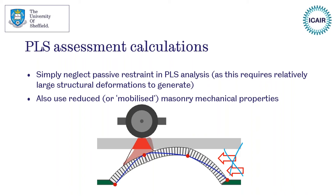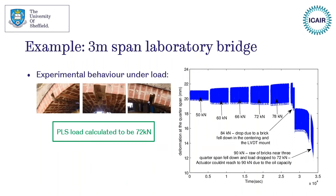How do we identify that occurrence? In basic terms, if we neglect the passive resistance from the soil - which requires quite large deformations to generate - and also use reduced or mobilised masonry mechanical properties, then we can use the same kind of analysis as the ultimate limit state to give us a permissible limit state. In the previous example, if we apply that simple analysis approach, the permissible limit state load is calculated to be 72 kilonewtons, which is a little bit lower than the 84 kilonewtons the bridge actually took before it became unserviceable, but it's certainly reasonably close and it's conservative, which is useful.